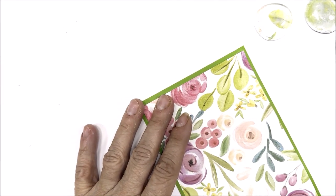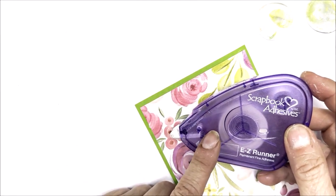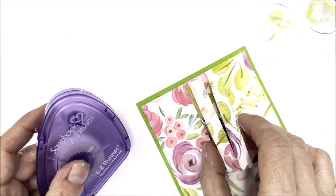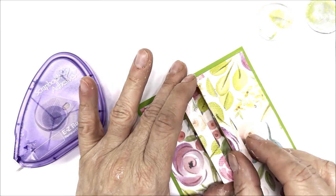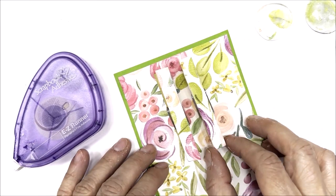To attach my pieces, I'm going to be using some scrapbook adhesives. This is actually for vellum, but it works really well for this type of project. Decide where you want your clothespins first. You can always put this down and decide where everything's supposed to be before you start. I already know what I want.